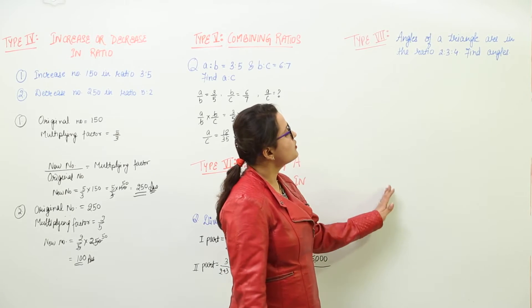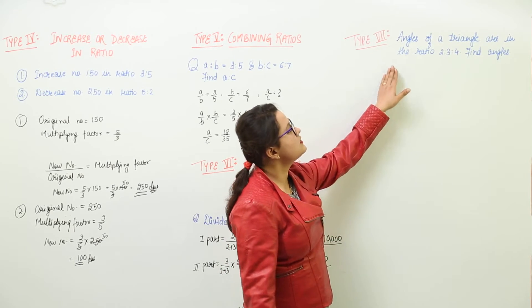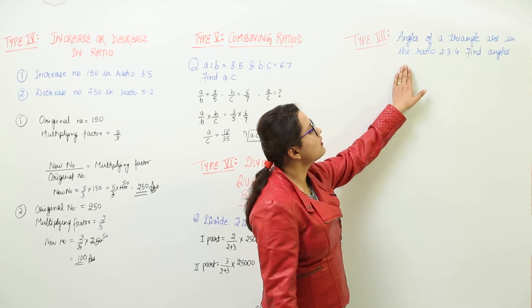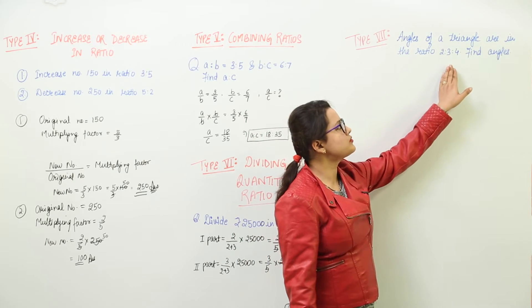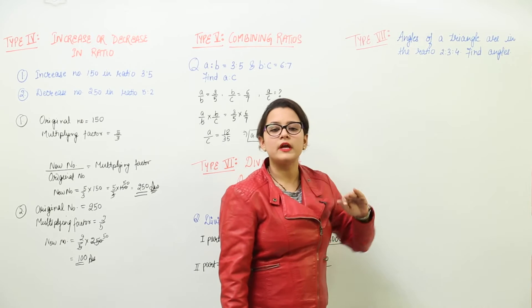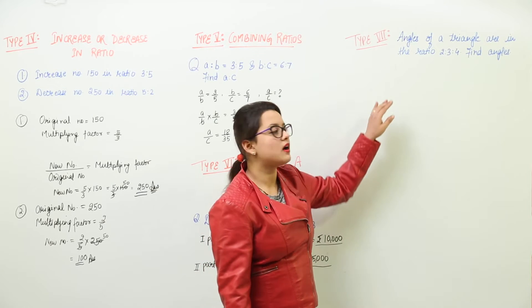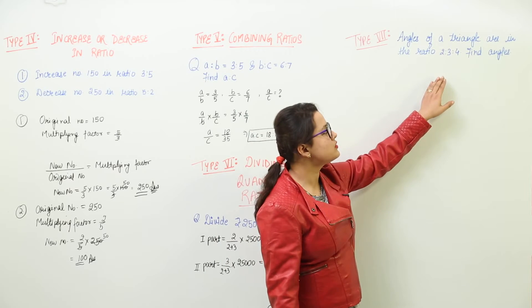Now, the last type of question is when angles of a triangle are in the ratio 2:3:4. A triangle has three angles, and these three angles are in the ratio 2:3:4.